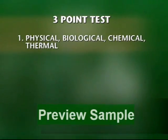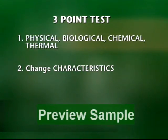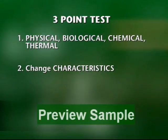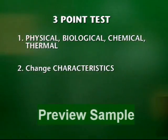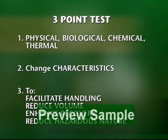The three-point test says that firstly, the waste must undergo either a physical, biological, chemical or thermal treatment. That treatment must alter the characteristics of the waste. And also, that must do so in order to facilitate its handling, to reduce its volume or to enhance recovery, and also to lessen its hazardous nature.